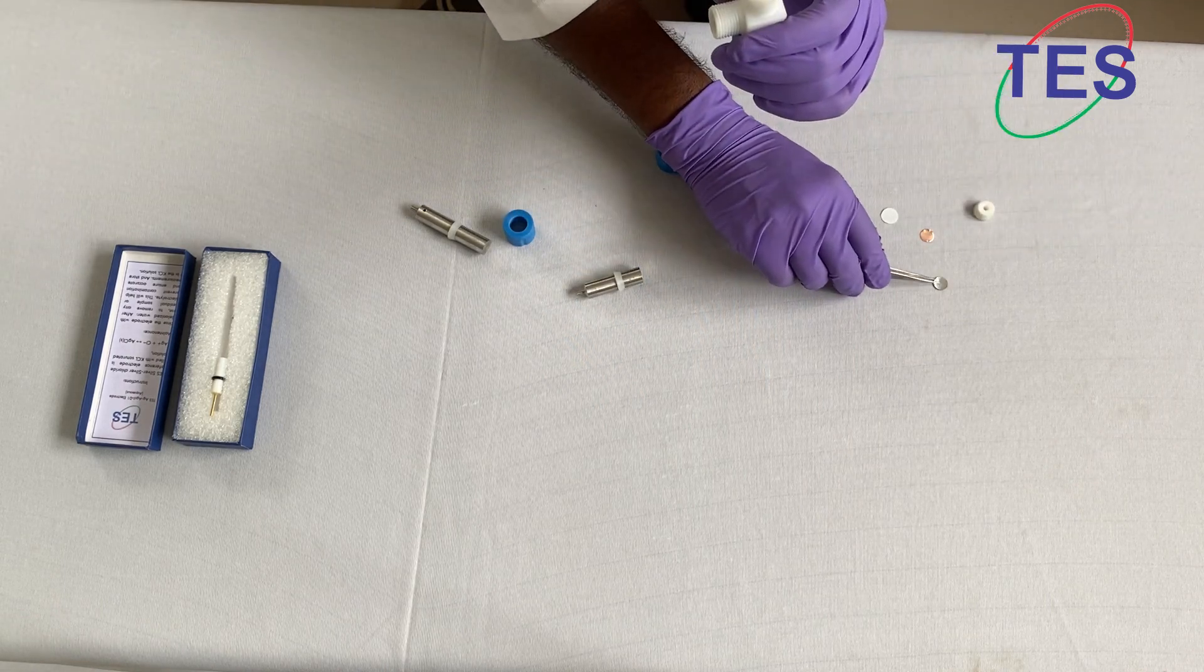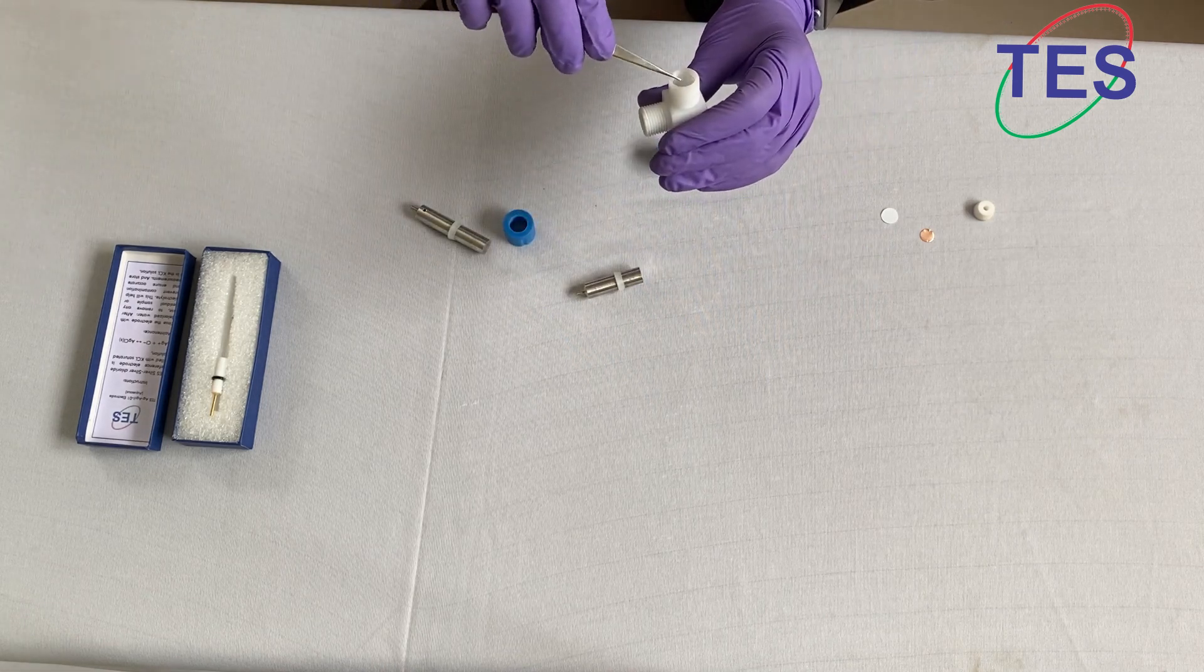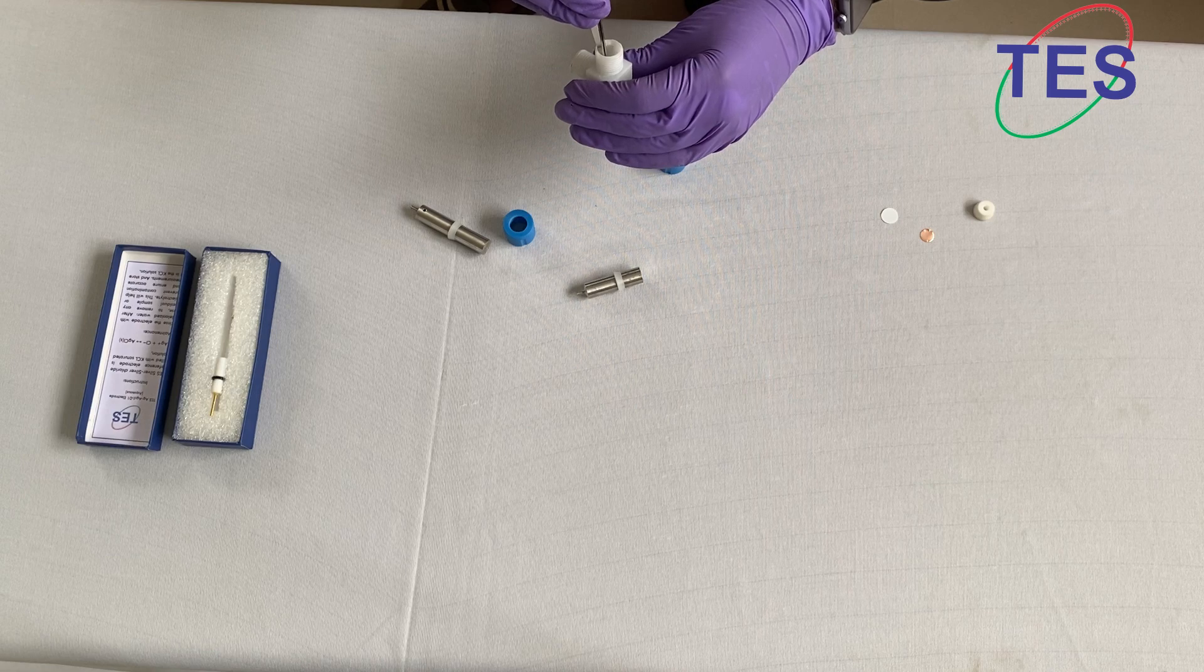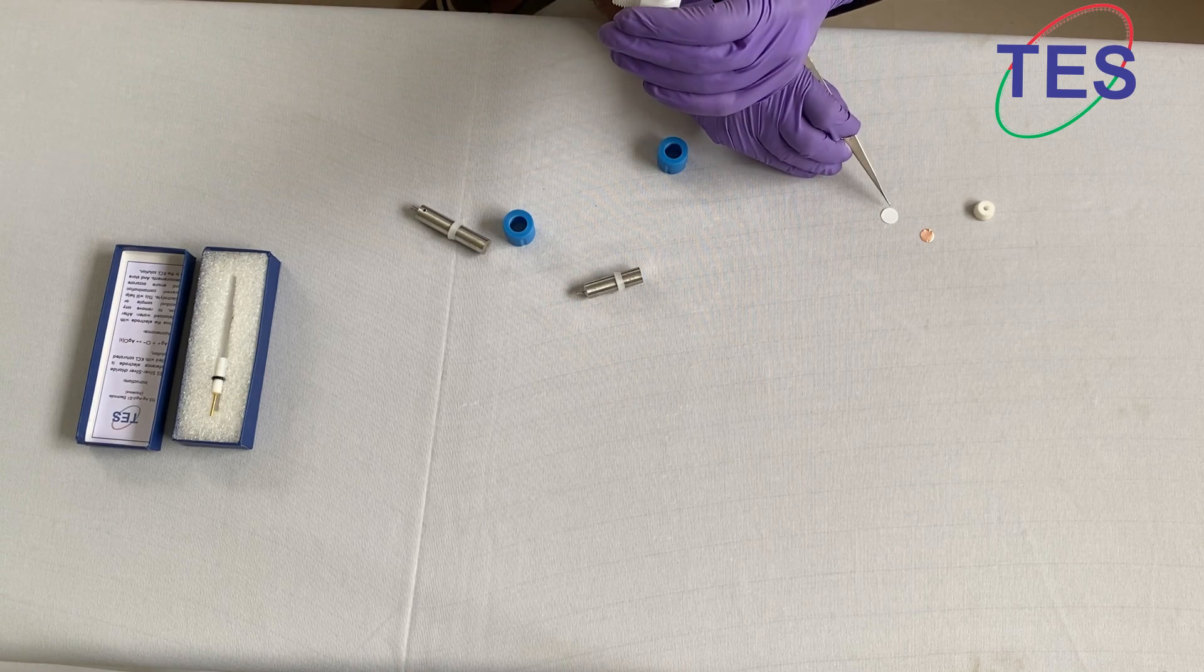After that, you have to take your working electrode material and keep it like this, then your separator.